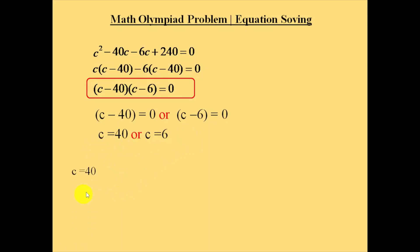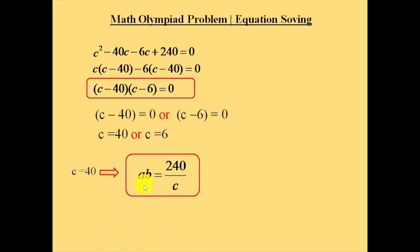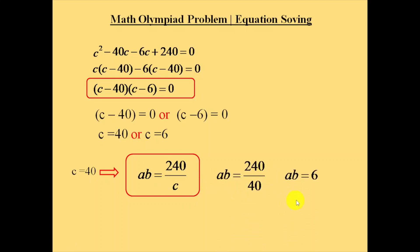Let's consider first that c is equal to 40. Substituting into the equation a into b equals 240 by c gives a into b is equal to 240 by 40, which equals 6. So a into b is equal to 6.